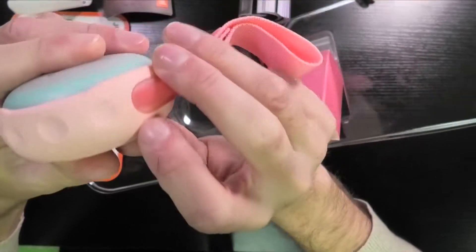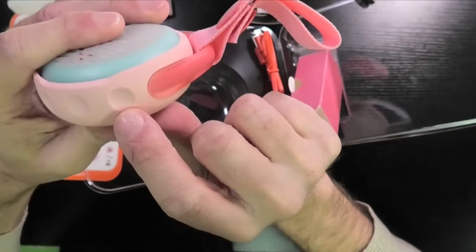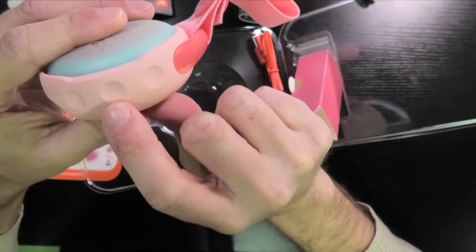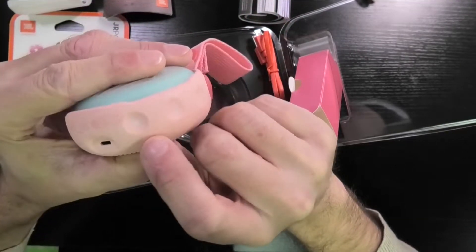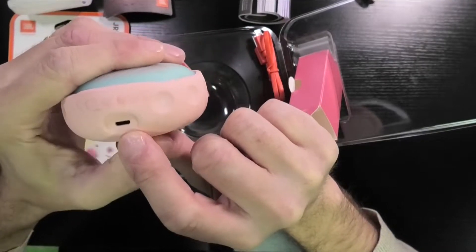And then here on the sides we have some buttons. We have the on-off button, the Bluetooth pairing button, and then here the little light button for the nightlight function.